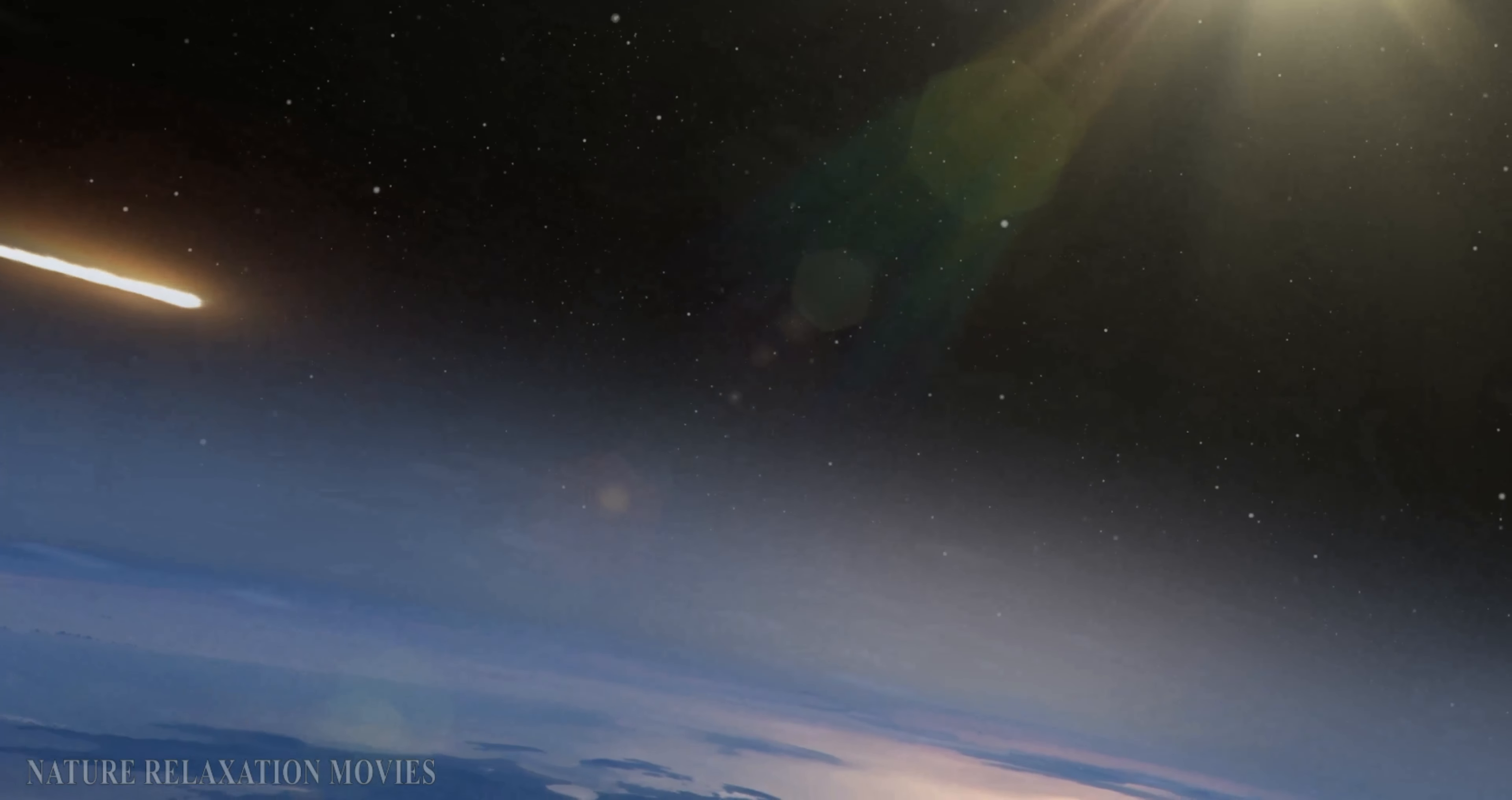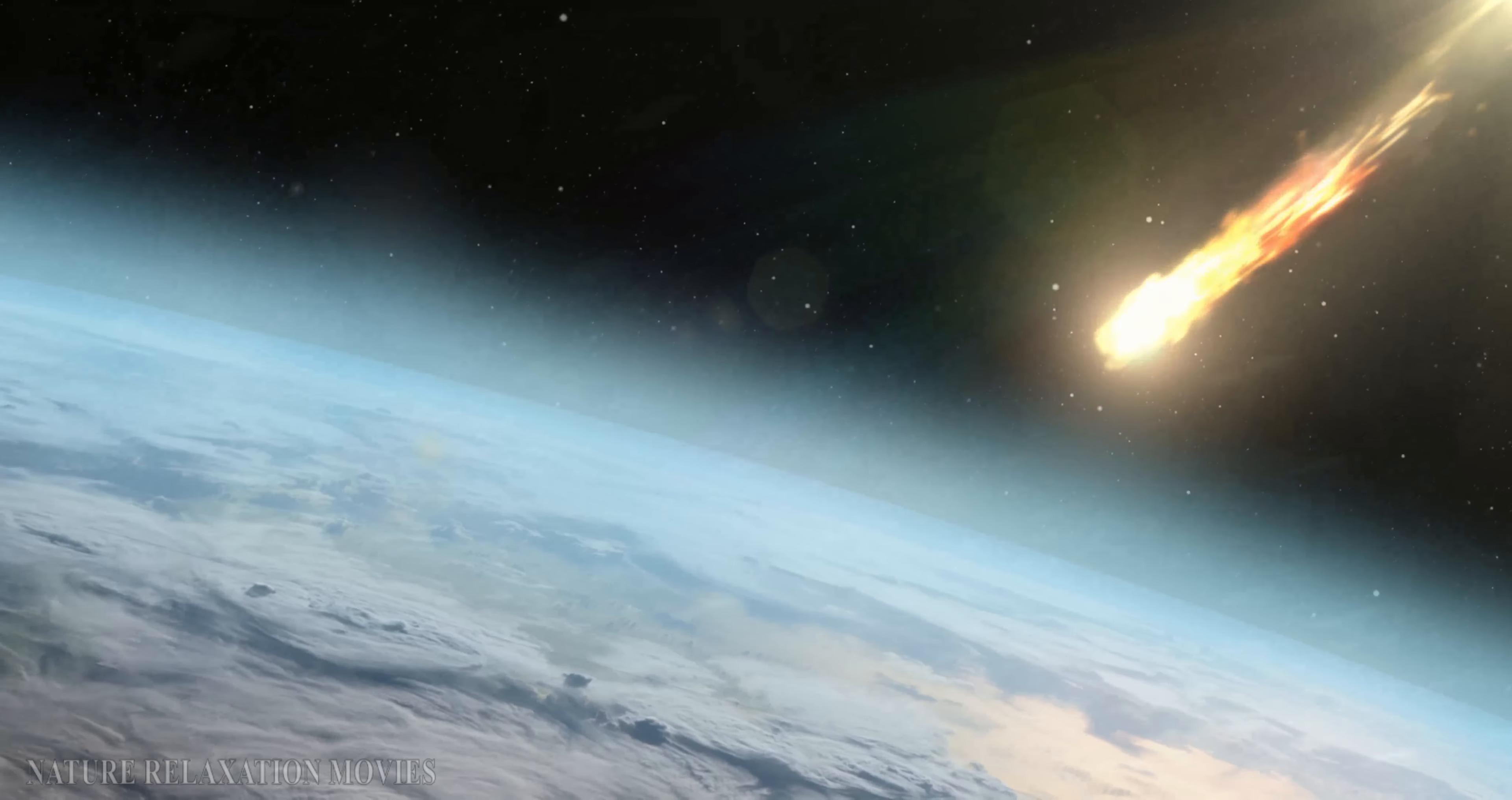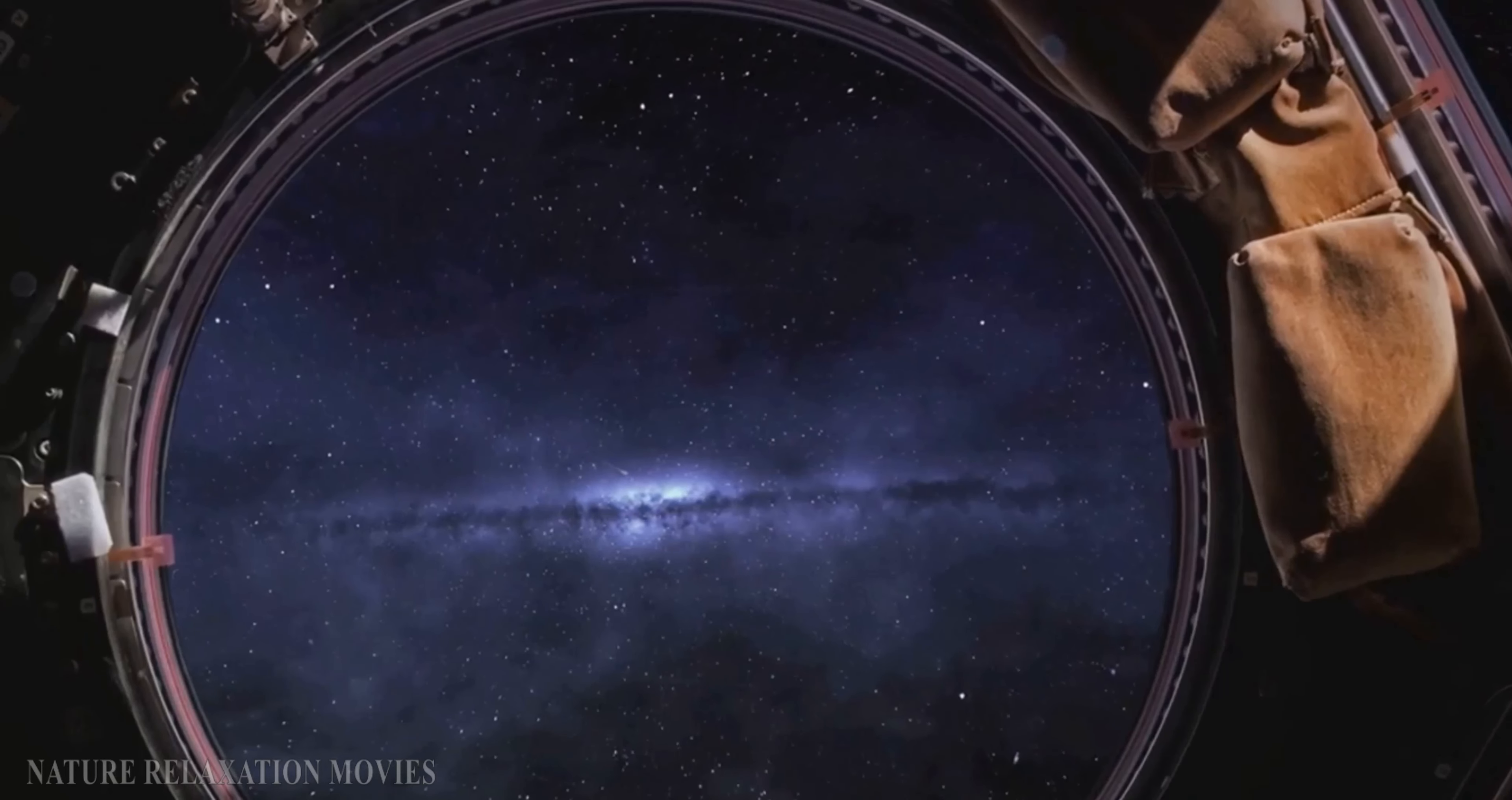This celestial detritus crosses paths with Earth as we orbit the sun. Upon entering our atmosphere, the friction causes the debris to burn up, producing the radiant streaks of light we marvel at in the night sky.